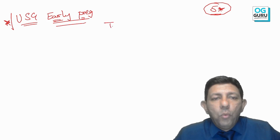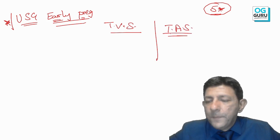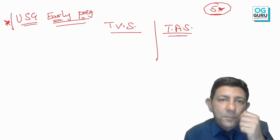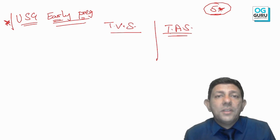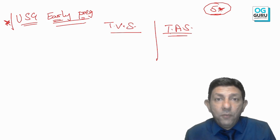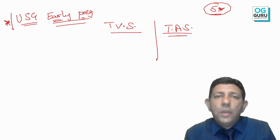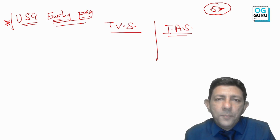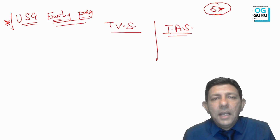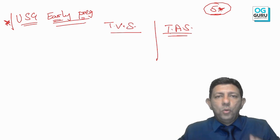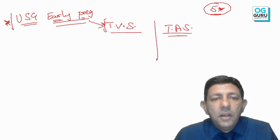There are two types of sonography: transvaginal sonography and transabdominal sonography. In early pregnancy, we always prefer transvaginal sonography because the uterus is a pelvic organ. As the uterus becomes bigger, scans are done through the transabdominal route — like the NT scan from 11-12 weeks onwards, anomaly scan, placenta, baby weight, AFI calculation — all transabdominal. But in early pregnancy, we always prefer transvaginal sonography.